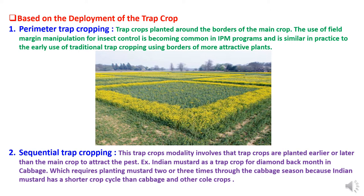The second modality is based on the deployment of the trap crop. The first deployment type is perimeter trap cropping, in which trap crops are planted around the borders of the main crop. The use of field margin manipulation for insect control is becoming common in integrated pest management programs, and is similar in practice to the early use of traditional trap cropping using borders of more attractive plants.